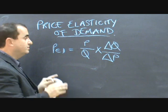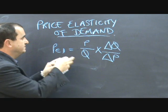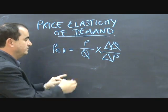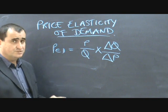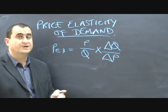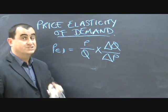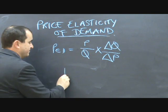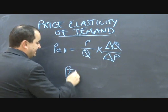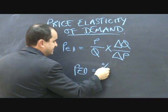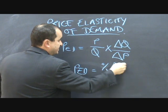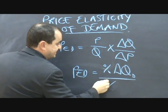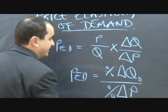You can input the numbers of your prices and quantities and you will arrive at a value. But you may not have actual quantities — you may be working with just percentage changes, in which case you need the other equation: percent change in quantity demanded over percent change in price.